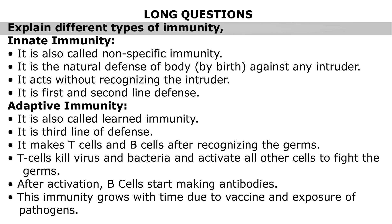Adaptive immunity: it is also called learned immunity. It is the third line of defense. It makes T cells and B cells after recognizing the germs. T cells kill viruses and bacteria and activate all other cells to fight the germs. After activation, B cells start making antibodies. This immunity grows with time due to vaccines and exposure to pathogens.